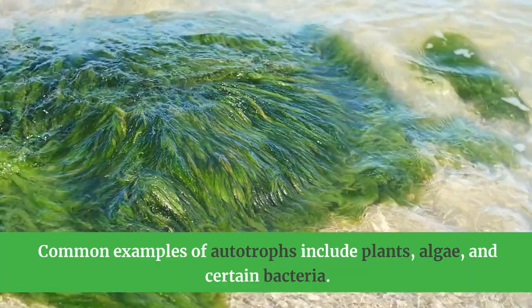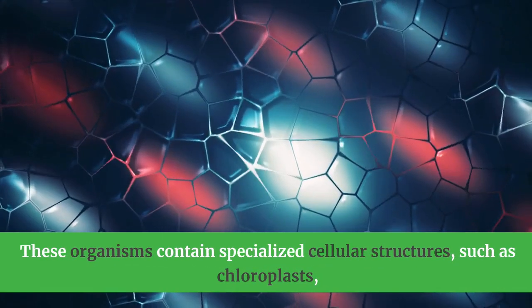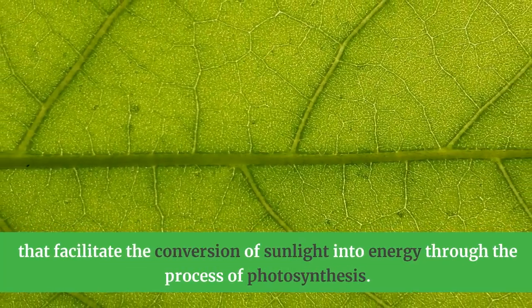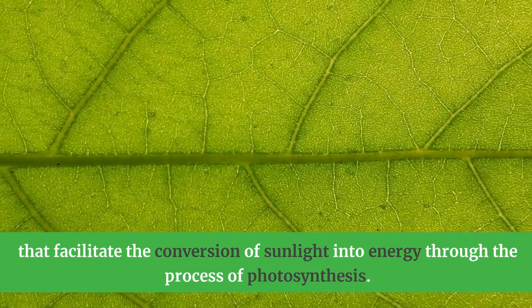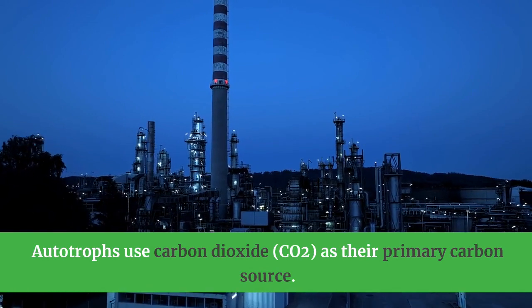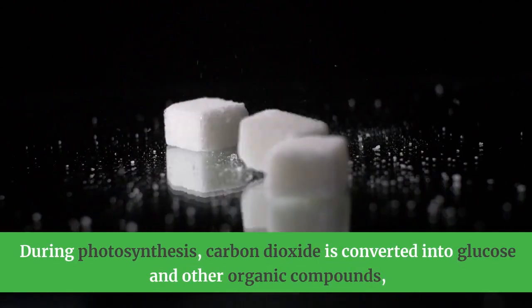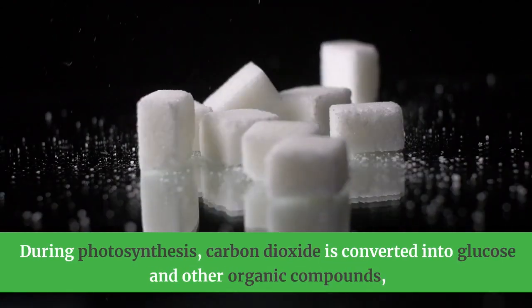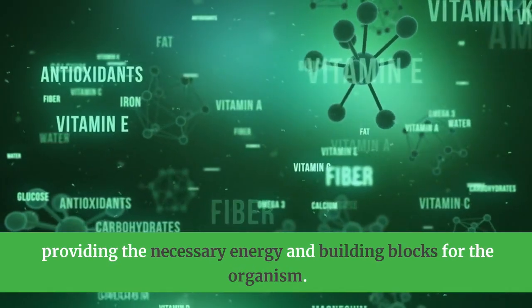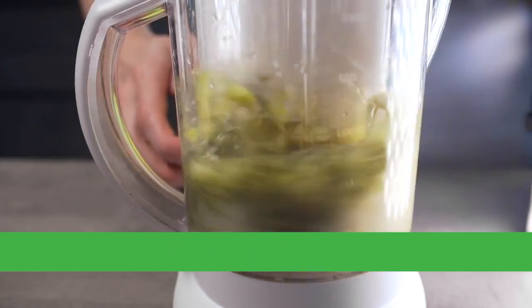Some autotrophs use inorganic chemicals as an energy source in a process known as chemosynthesis. Common examples of autotrophs include plants, algae, and certain bacteria. These organisms contain specialized cellular structures such as chloroplasts that facilitate the conversion of sunlight into energy through photosynthesis. Autotrophs use carbon dioxide (CO2) as their primary carbon source. During photosynthesis, carbon dioxide is converted into glucose and other organic compounds, providing the necessary energy and building blocks for the organism.